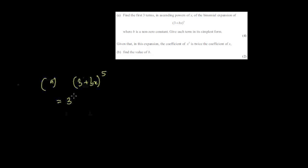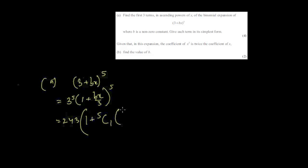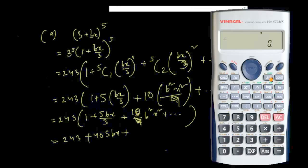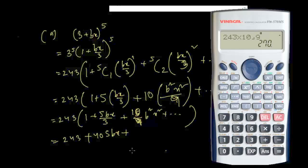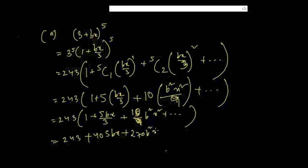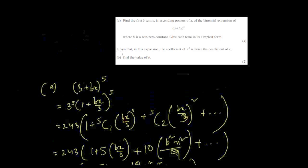New problem: expand (3 + bx)^5 to the first three terms. Take 3^5 = 243 common, giving 243·(1 + (bx/3))^5. Expanding: 243·[1 + 5C1·(bx/3) + 5C2·(bx/3)²]. Computing: 243 + 243·5·(b/3)x + 243·10·(b²/9)x² = 243 + 405bx + 270b²x² + …